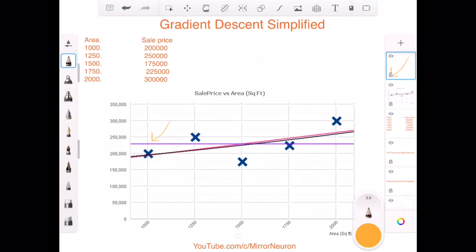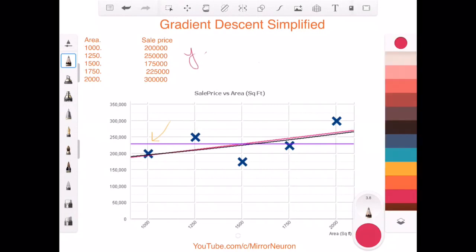From our knowledge of straight lines, we know that y equals mx plus b - that is the equation of a straight line. If I relate it to our current example, y is the sale price and x is the area in square feet. So by changing different values of m and b, we can draw different lines, and for each line that we draw here, we are going to calculate how wrong we have been in our estimate.